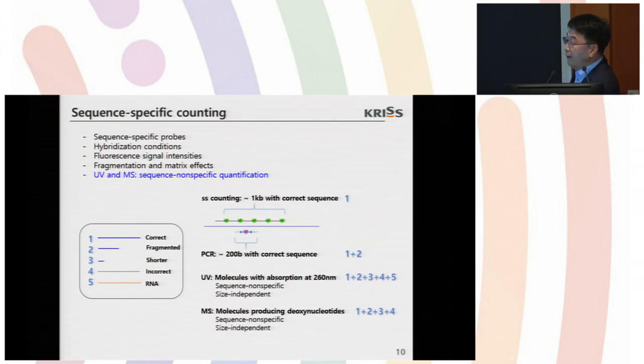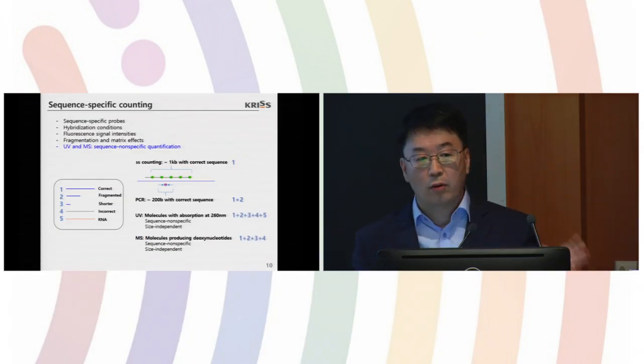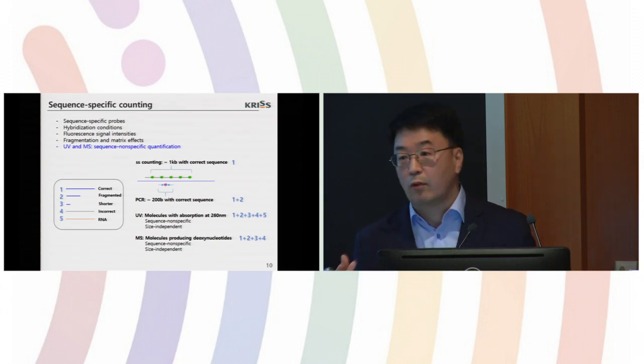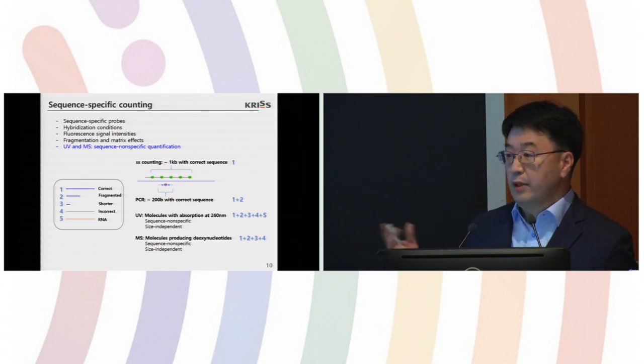If we use sequence-specific counting, actually we are detecting and quantifying up to one kilobase long DNA with correct sequence. If we apply PCR-based methods, the PCR will detect and quantify much smaller fragments with correct sequence. It can detect and quantify 100 or 200 base pair fragments. If we apply UV spectrometry, then the UV will detect all the molecules absorbing 260 nanometer wavelength. And the UV method is sequence-independent and size-independent. Mass spectrometry is also sequence-independent, size-independent. These two methods are sequence-specific methods. These are not sequence-specific.